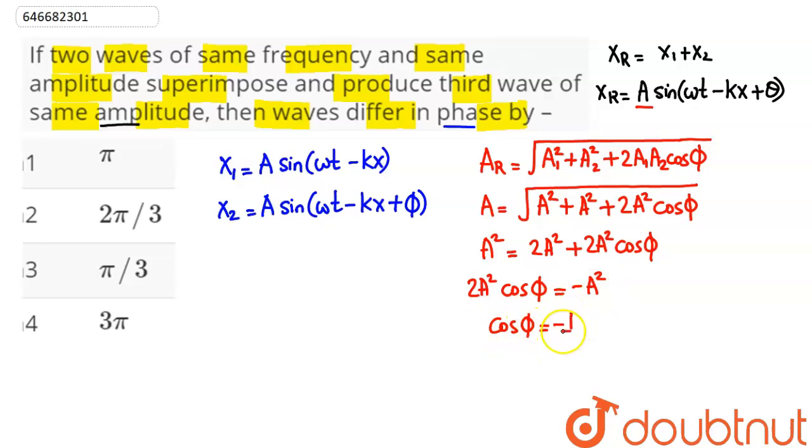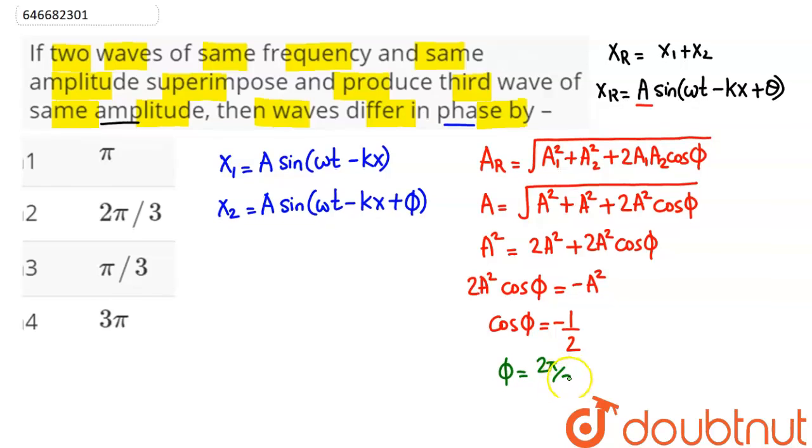This implies the phase difference is 120° or 2π/3. Therefore, 2π/3 is the phase difference between the two waves, and option 2 is the correct answer.